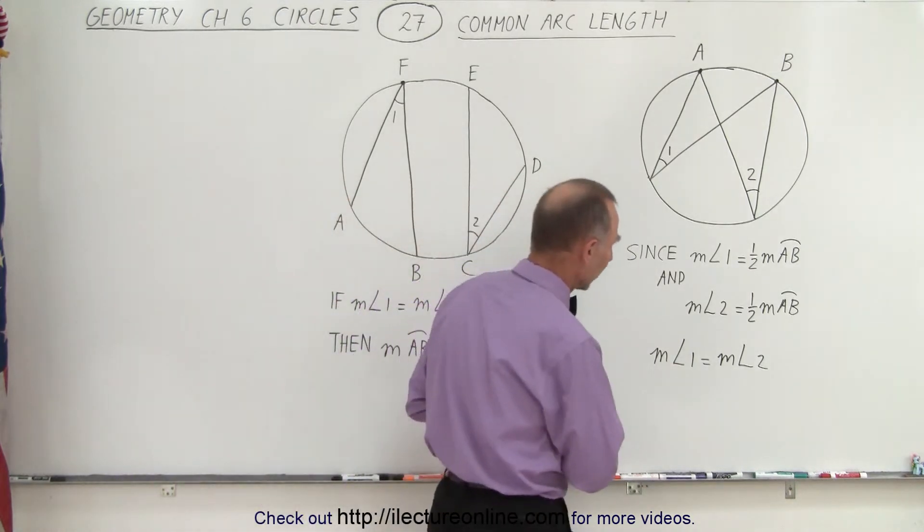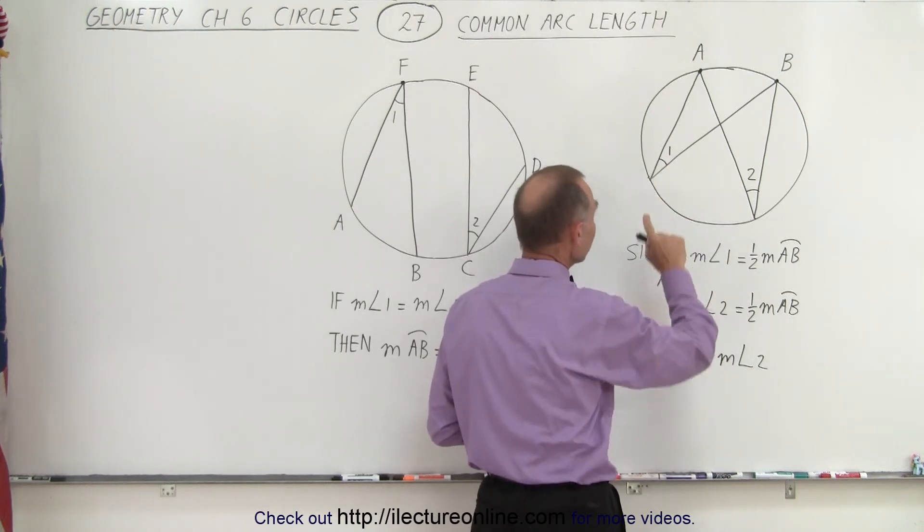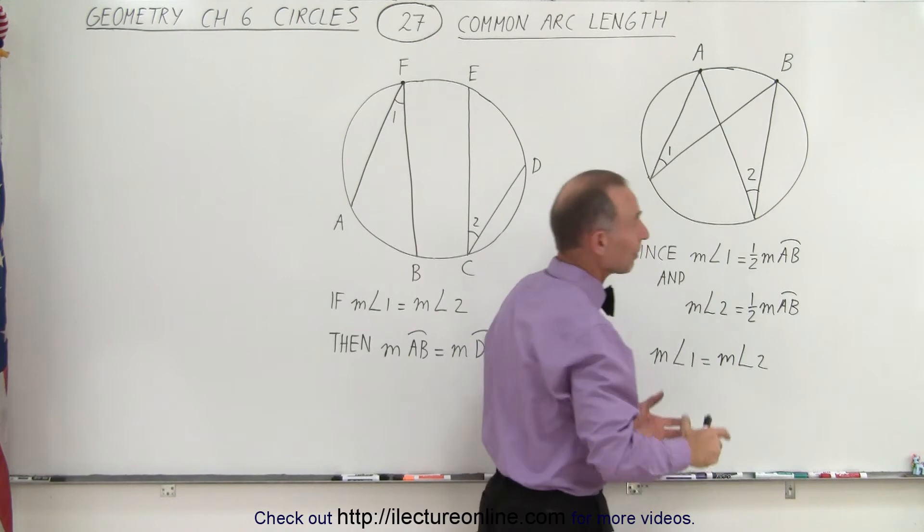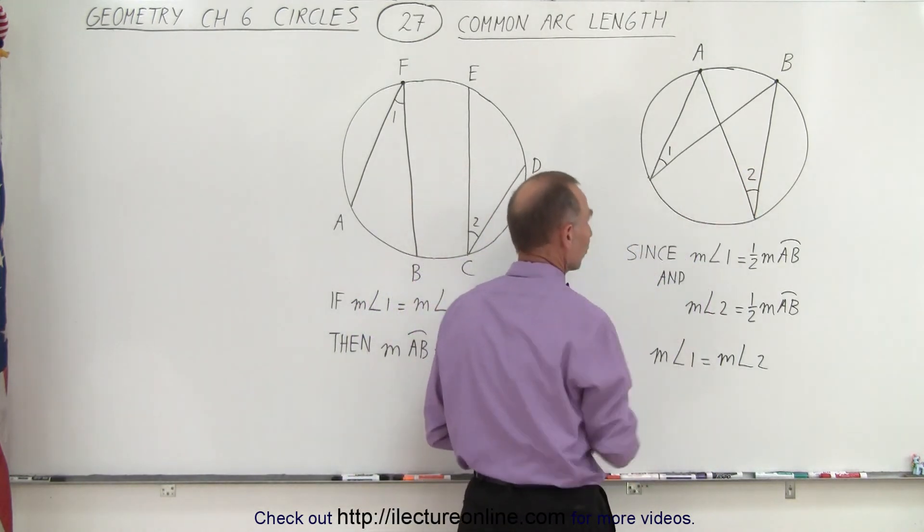So let's take a look at our first example here on the right. We can see here that the measure of angle 1 must indeed be half the measure from the arc length from A to B, and the reason is because we have the point on the very edge of the circle.